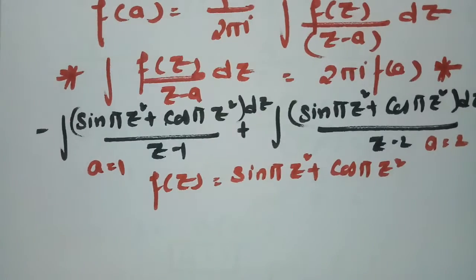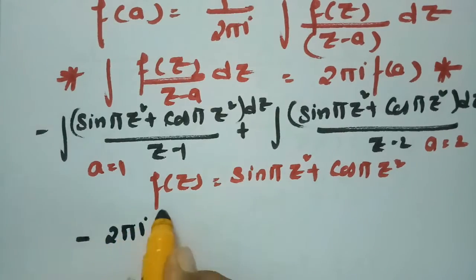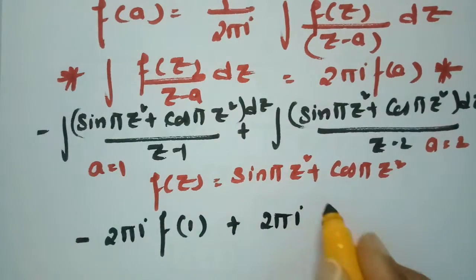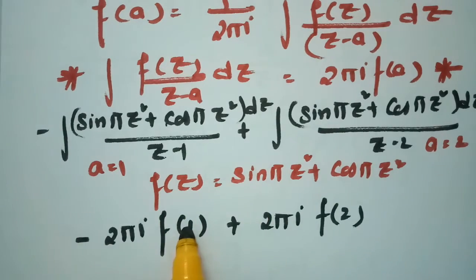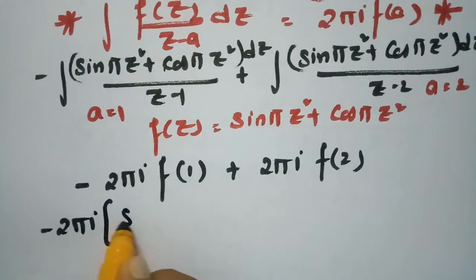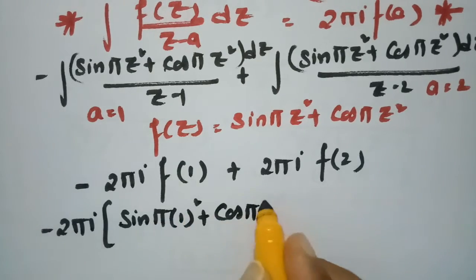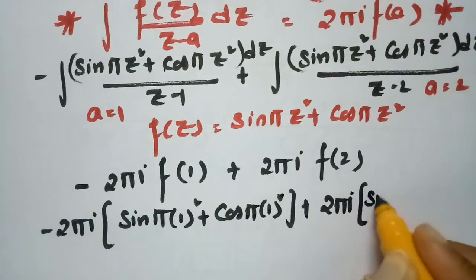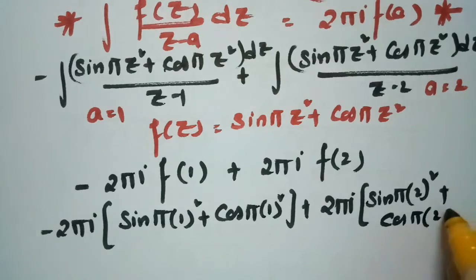Using the formula 2πi · f(a): the first integral gives −2πi · f(1) = −2πi · [sin(π·1²) + cos(π·1²)], and the second gives +2πi · f(2) = +2πi · [sin(π·2²) + cos(π·2²)]. This simplifies to −2πi[sin π + cos π] + 2πi[sin 4π + cos 4π].